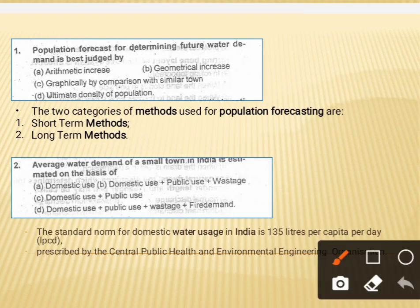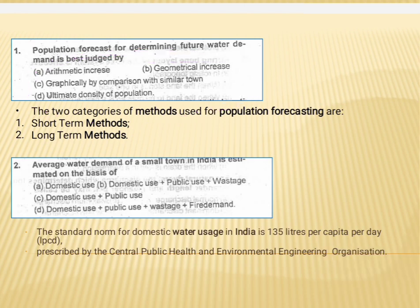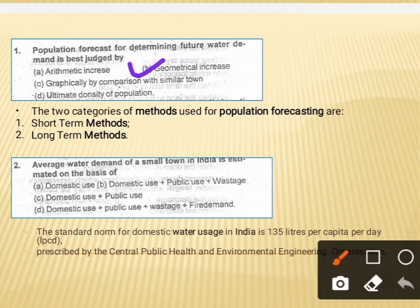In the first question, it says that population forecast for determining future water demand is best judged by which methodology. The correct answer for this question is option B, which is the geometrical increase method.